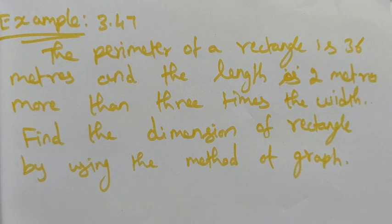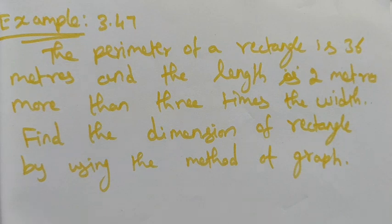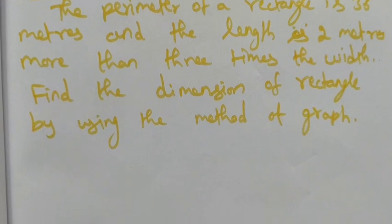Hi students. Class 9, Example sum 3.47. The perimeter of the rectangle is 36 meters and the length is 2 meters more than 3 times the width. Find the dimensions of the rectangle by using the method of graph.